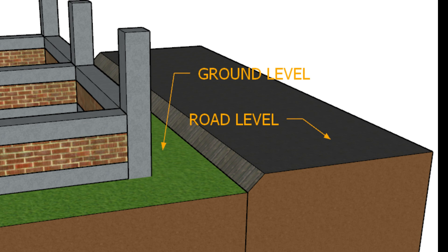But why do we raise the plinth level? If your floor level is too close to the road, heavy rains or high ground water levels can easily allow water and moisture to enter the house. It also invites dust, pests, and even flooding in extreme cases. Another concern is that over time, road levels tend to increase due to resurfacing and maintenance, making your house appear lower and more exposed.